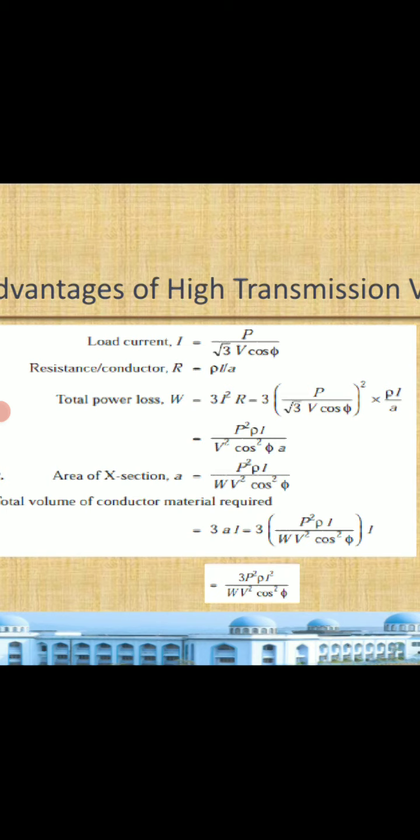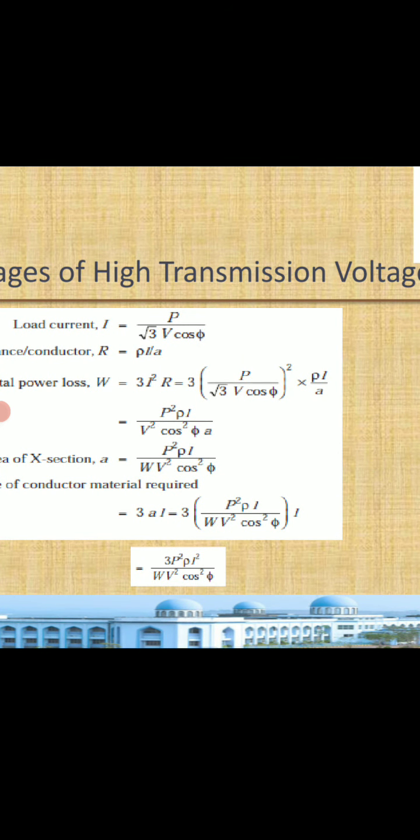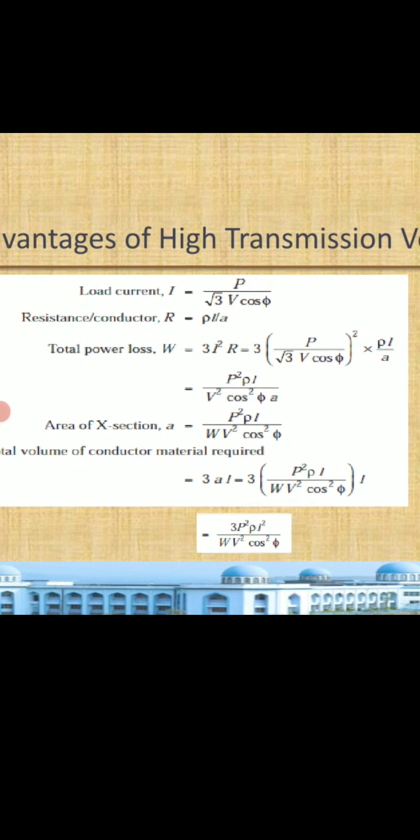The resistance R is directly proportional to the length and inversely proportional to the area of the conductor, with resistivity as the proportionality constant, so R equals rho L divided by A. Total power loss W is given by 3 I squared R. Substituting the expressions for I and R and simplifying, the 3's cancel and the total power loss W equals P squared times rho times L divided by V squared times cos phi times A.